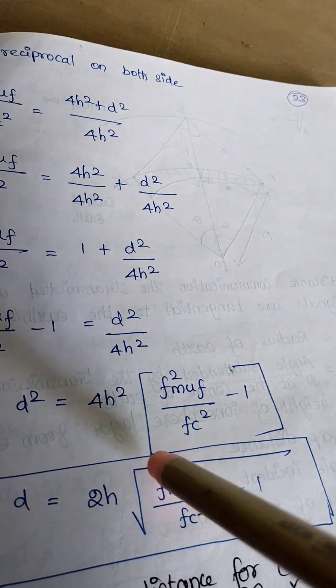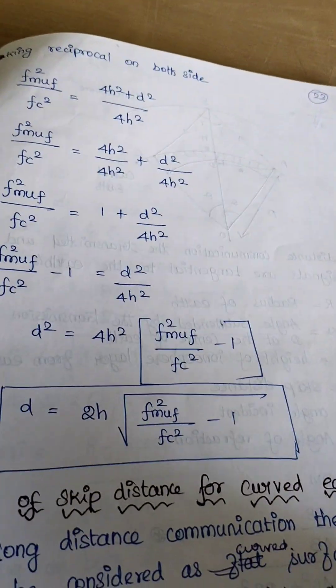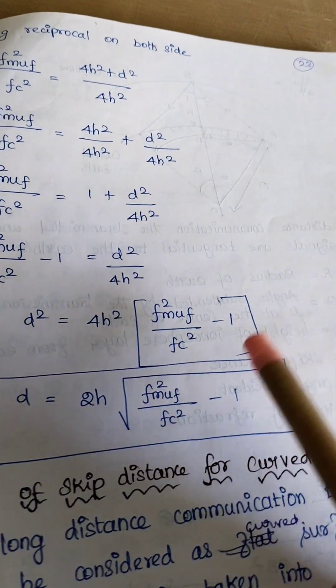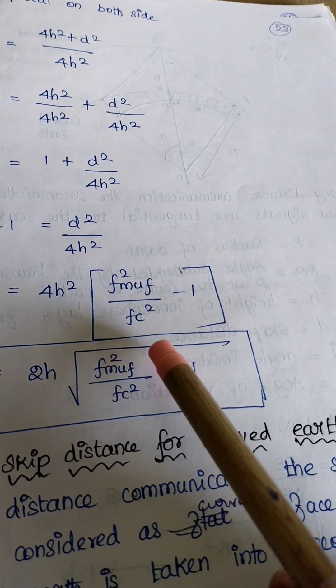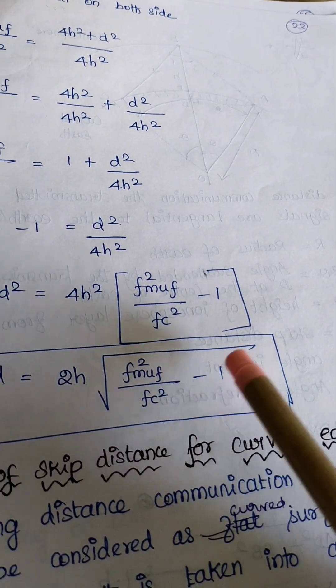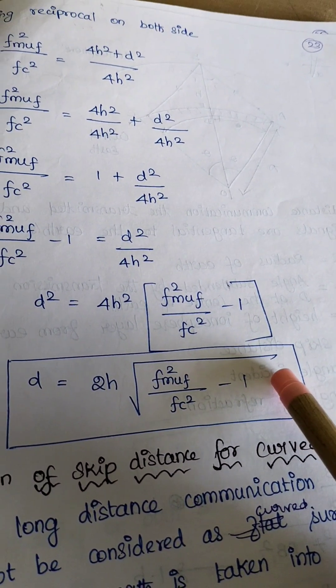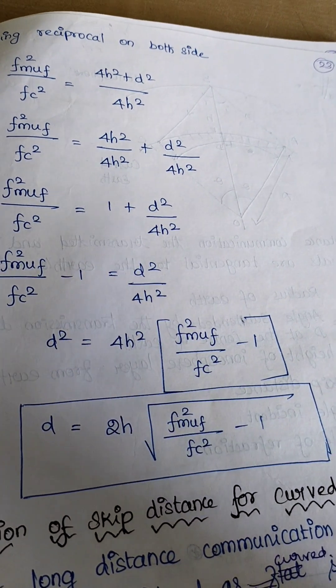The final formula for skip distance for flat earth is D = 2H × square root of (Fmuf squared / Fc squared minus 1). Thank you students.